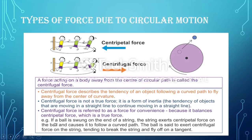Here is a clear example: if a ball is tied to the end of a string and swung, the ball follows a curved path. The ball exerts centrifugal force on the string — a force tending to break the string and fly off along the tangent. This is called centrifugal force because the ball moves in a circular motion and exerts force on the string outward.